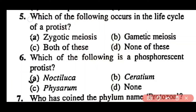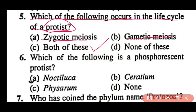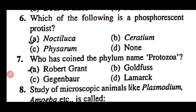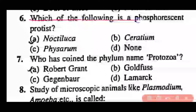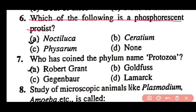Question 5: Which of the following occurs in the life cycle of a protest — zygotic meiosis, gametic meiosis, both of these, or none? Correct answer is option C. Both zygotic meiosis and gametic meiosis occur in protests. Question 6: Which of the following is a phosphorescent protest — Noctiluca, Serratia, Fisarium, or none? Correct answer is option A. Noctiluca is a phosphorescent protest.